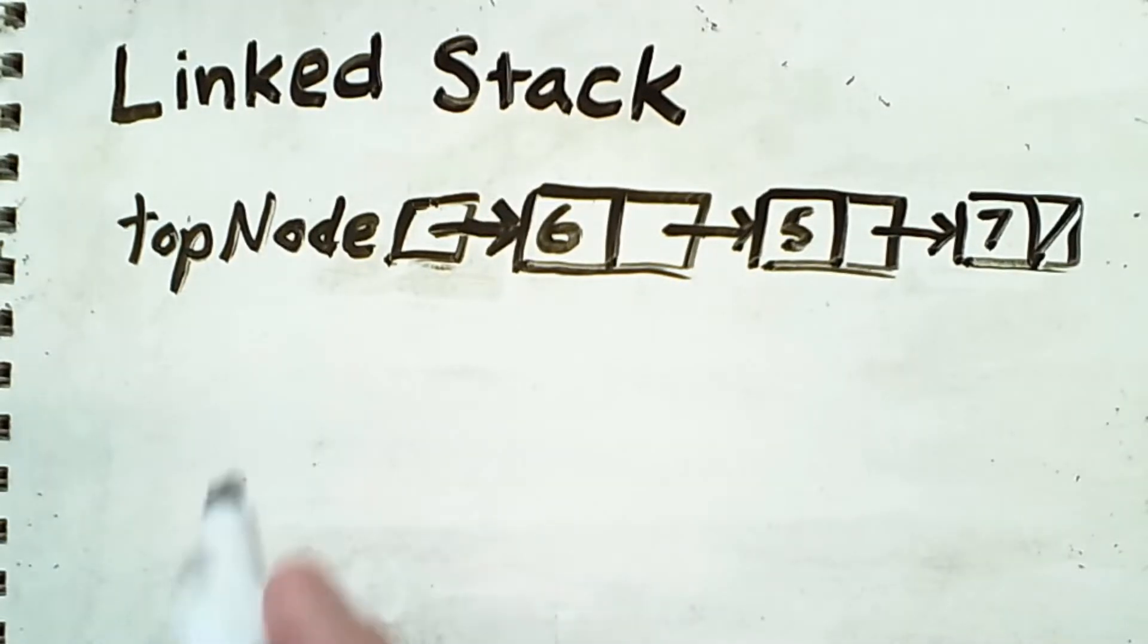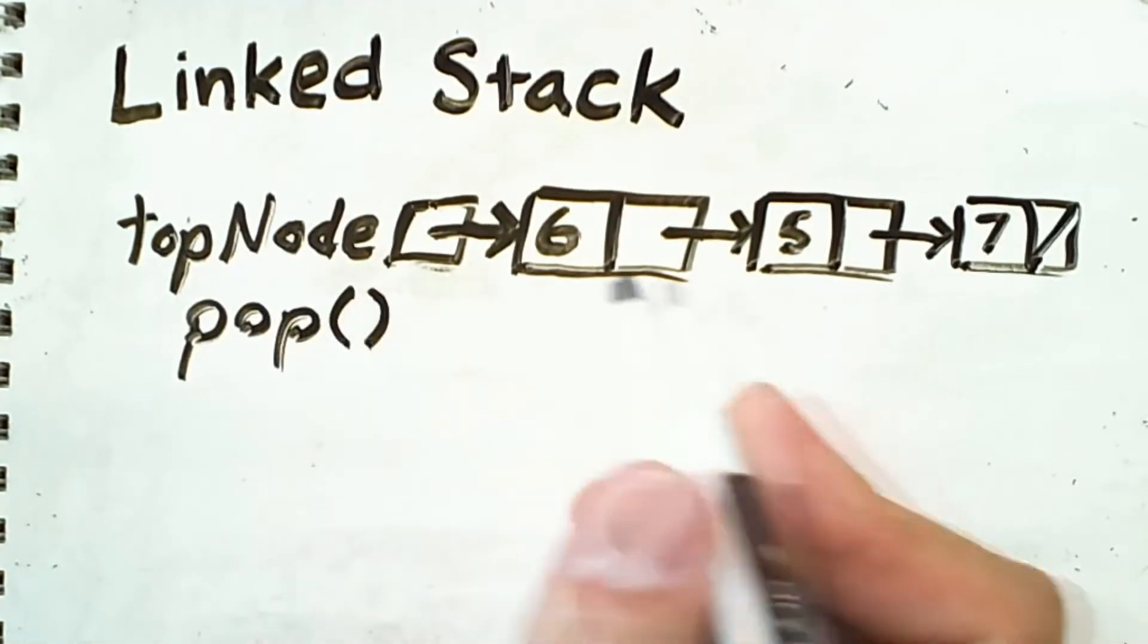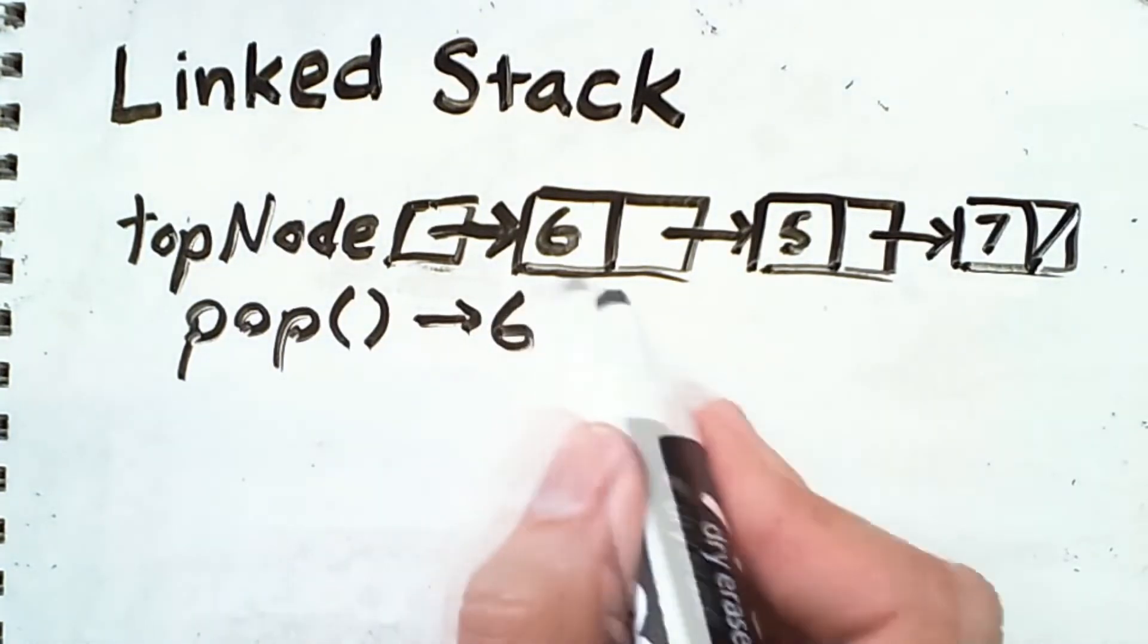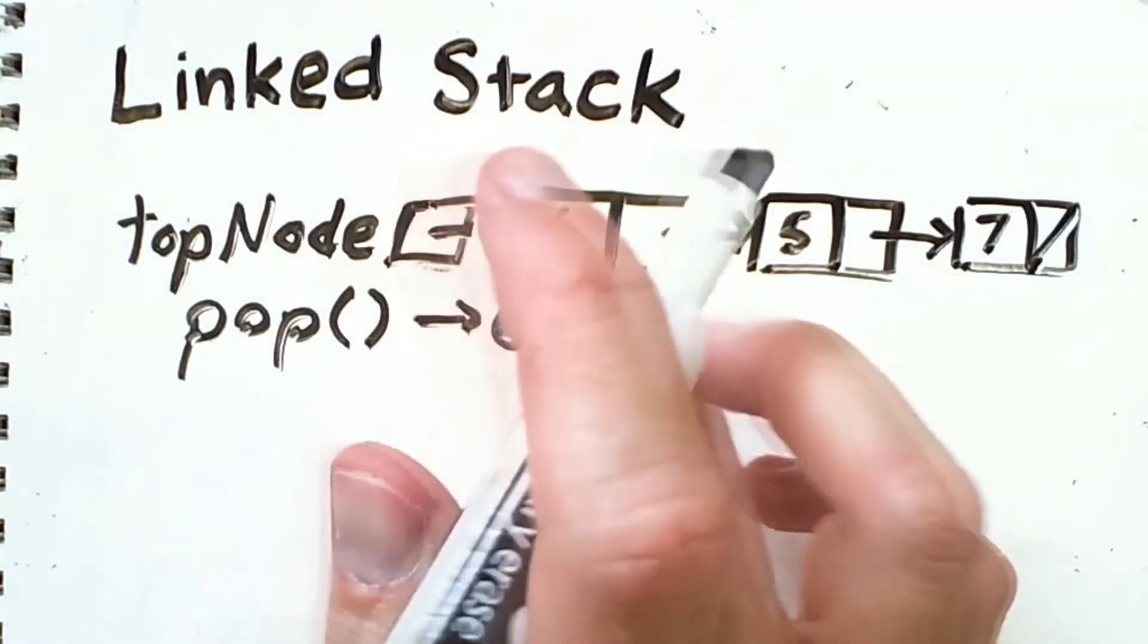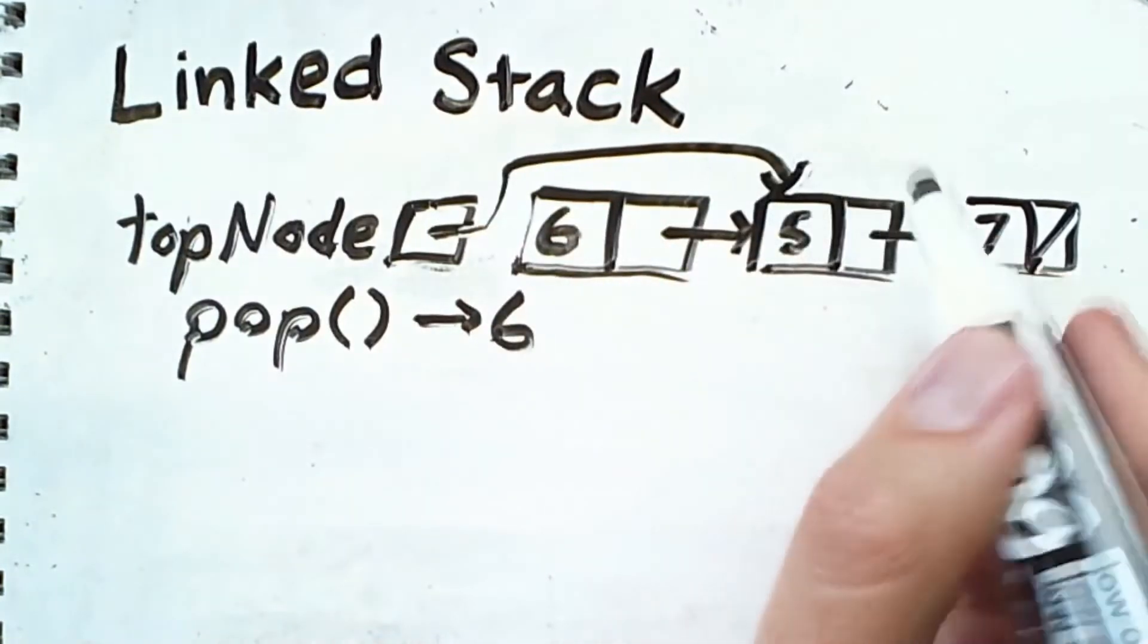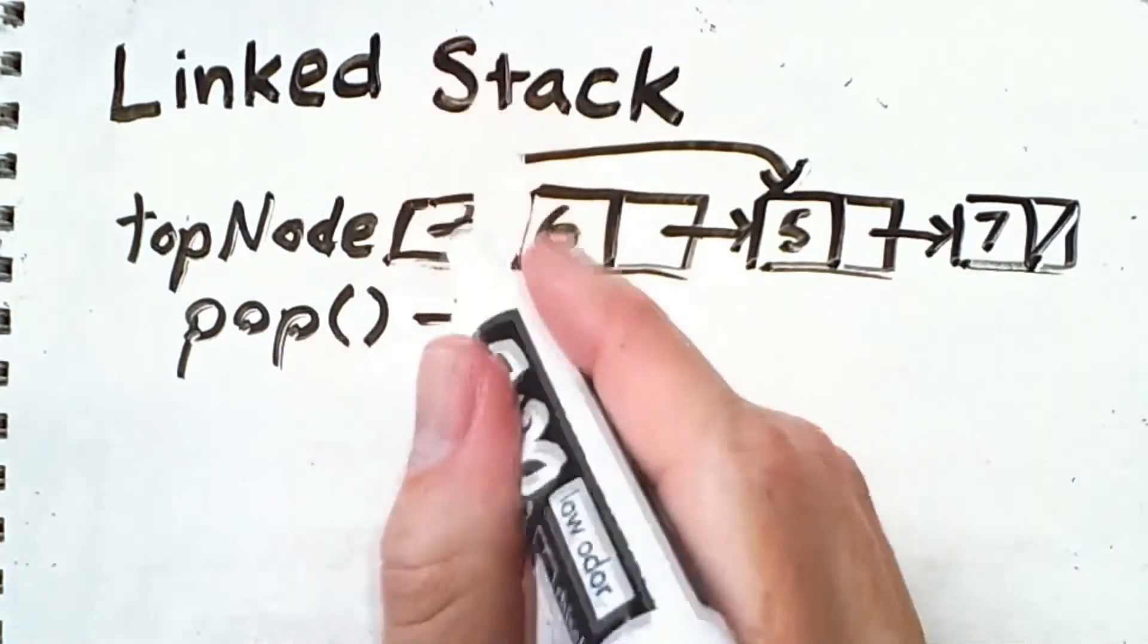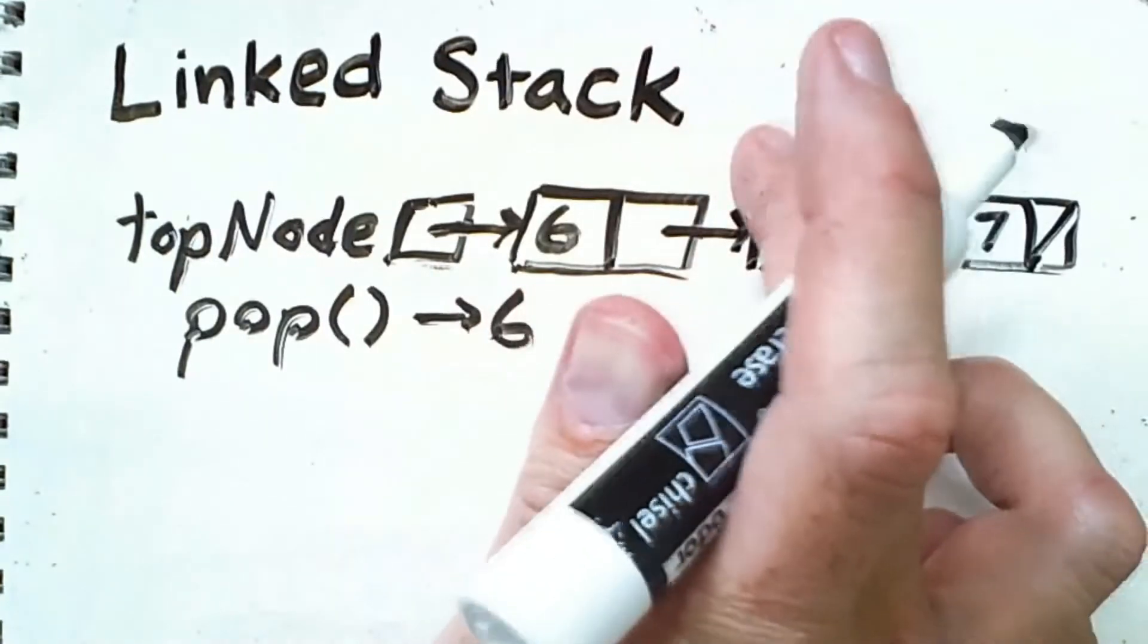Now if I want to pop a value from the stack, the pop operation would also return a value of 6. But it has to do more than that. It has to modify the stack structure to remove that top node. Essentially, what I want to do is make this arrow point here so that the node containing 5 is now on top. But how do I get from this representation to the next step?